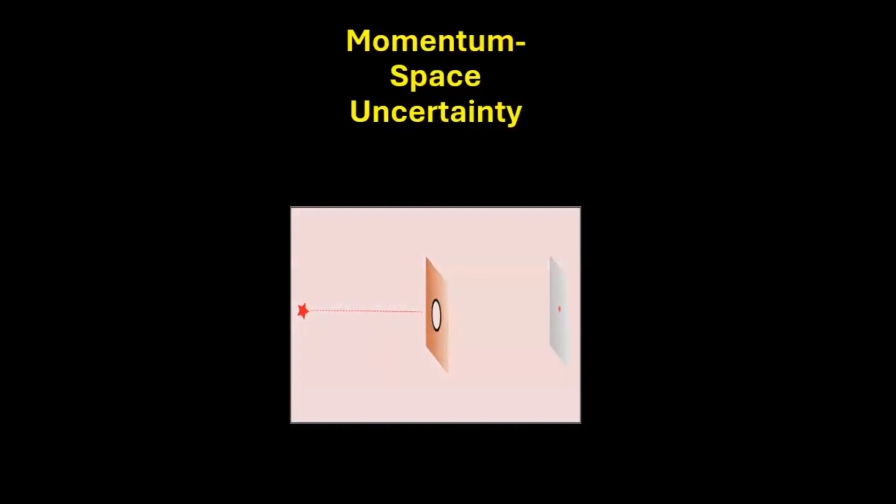On the other hand, if it's spread out and we know its speed well, we are not quite sure where exactly it might be.